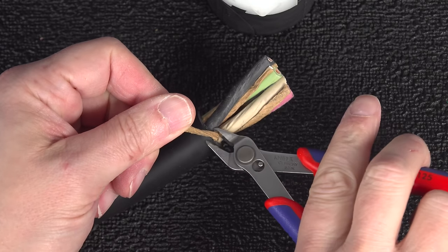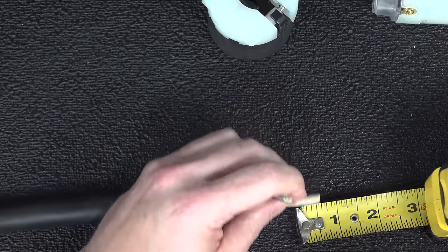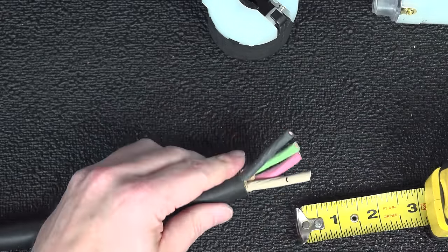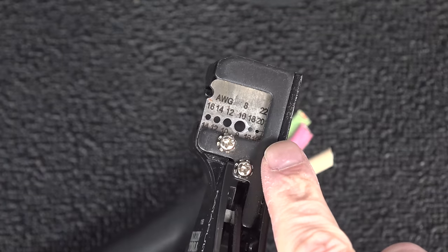Carefully trim off any of these paper pieces or any of these threads inside the cable. Now the directions tell us we need to remove a half an inch of the insulation off of each one of these four wires. I'm going to use my automatic wire stripper here and make sure that you're using the correct guide for 10 gauge wire.